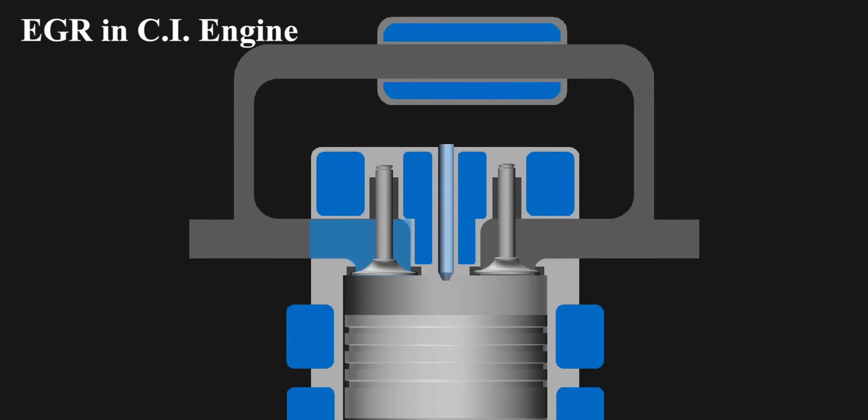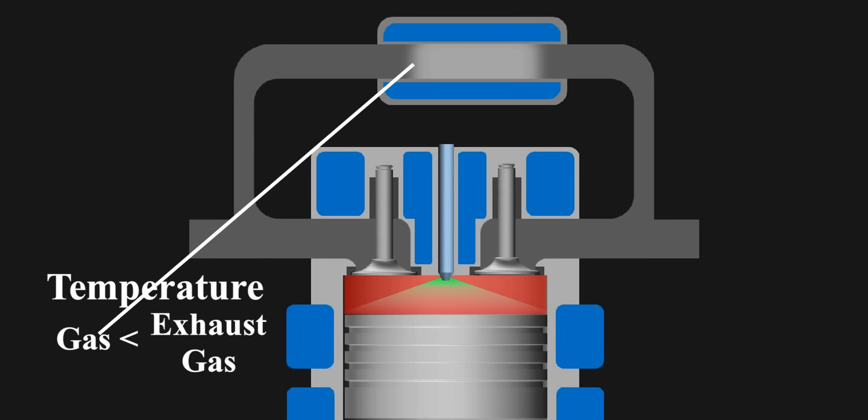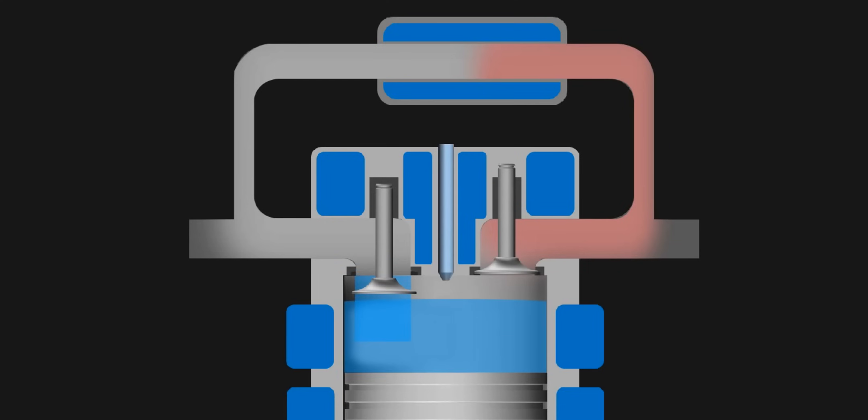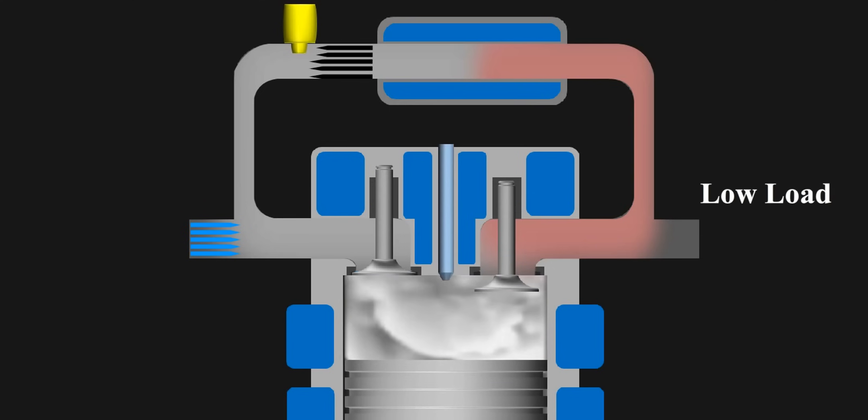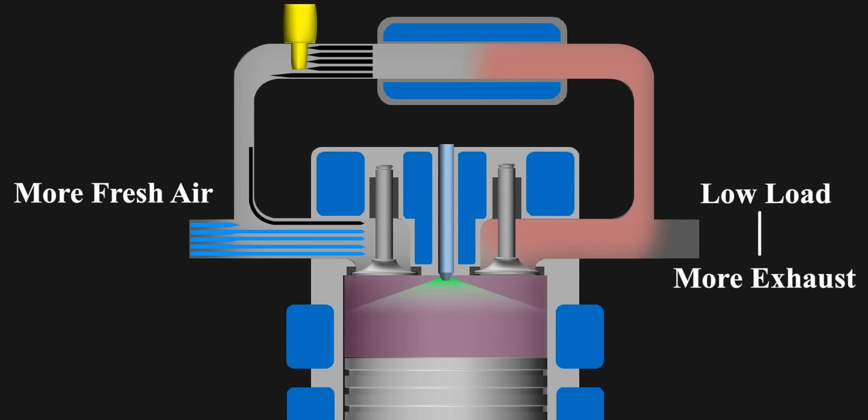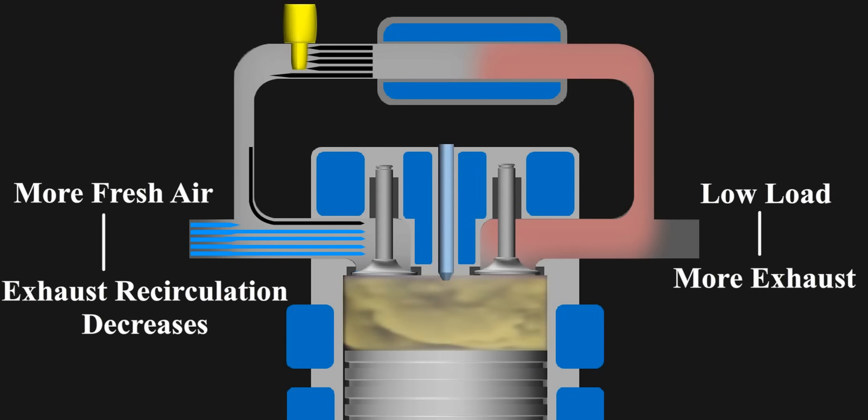Here comes the EGR. Some of the exhaust gas from the earlier cycle is diverted. Then, it is cooled to some extent. Now, the temperature of the gas is relatively lower than the exhaust gas, but is more than the atmospheric temperature. Now, this exhaust gas is recirculated back to the inlet manifold via an EGR valve. According to the load condition, the opening of the EGR valve varies. Lower the load, more the exhaust enters. While, as the load raises, more fresh air is allowed and exhaust recirculation is decreased.